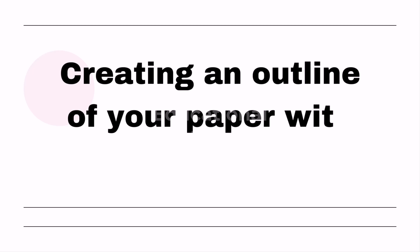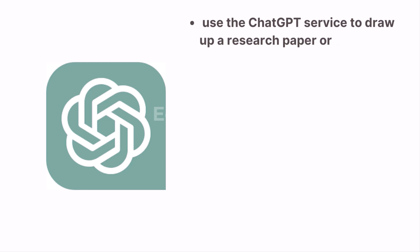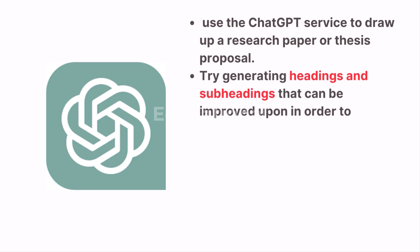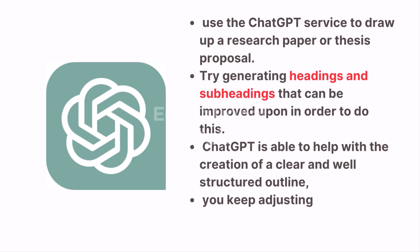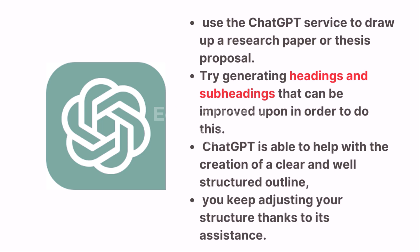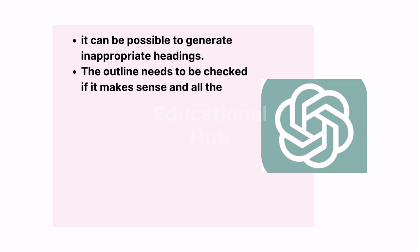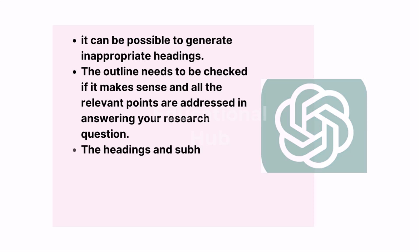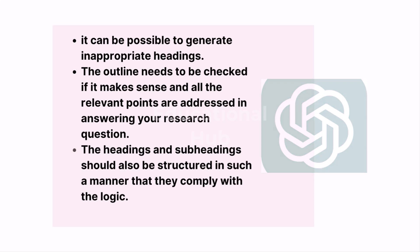Second: creating an outline of your paper with ChatGPT. You could use ChatGPT to draw up a research paper or thesis proposal by generating headings and subheadings that can be improved upon. ChatGPT is able to help with a clear and well-structured outline, especially if you keep adjusting your structure with its assistance. However, it may not know your topic well, so it can generate inappropriate headings. Always check that the outline makes sense, all relevant points are addressed, and the headings comply with logic.